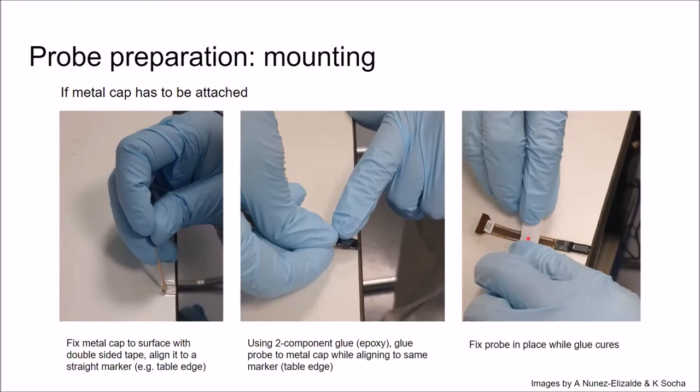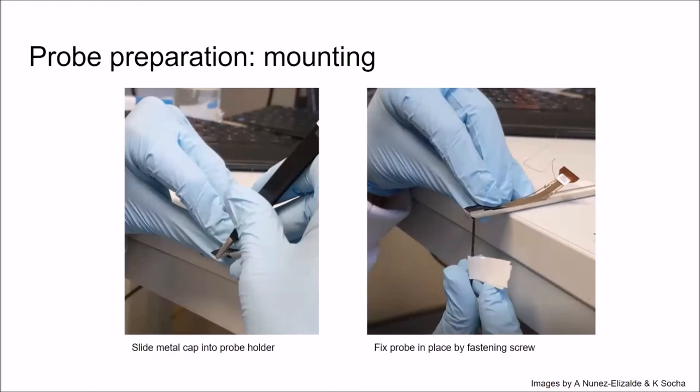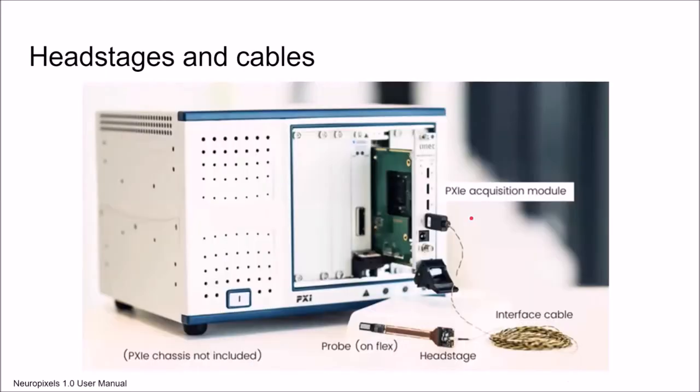You align it and then you fix the probe to the table, for example with some tape, so that the glue can cure for a while and makes a perfect connection to the metal cap. Once the metal cap is glued to the probe, you can then slide the whole probe to the rod, which will be held later on by the manipulator. You need to be careful with this again. You can use forceps to move the probe into this holder. Once it is in place, you can just tighten or fasten the screw. Now we have the probe fixed to the rod that will be held by the manipulator.